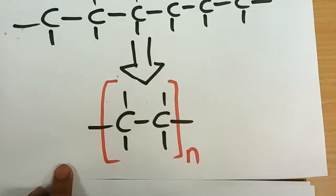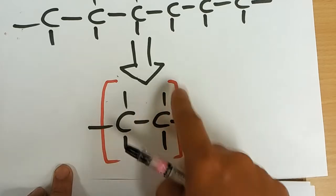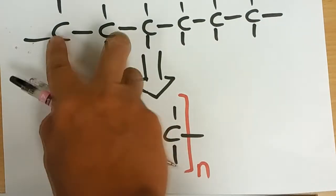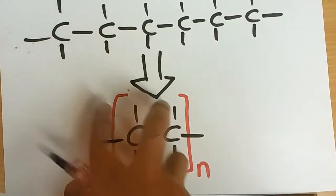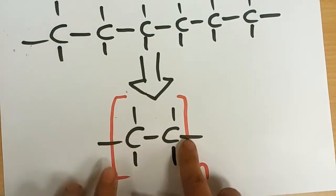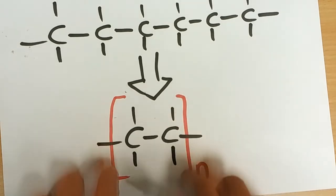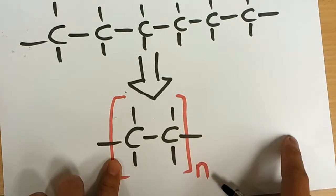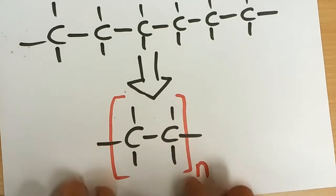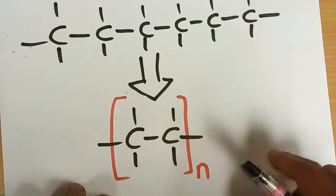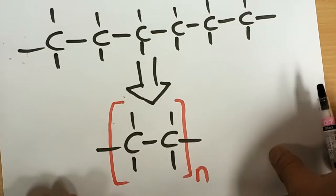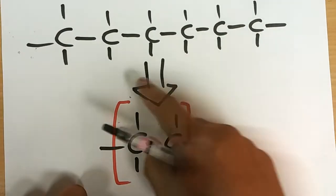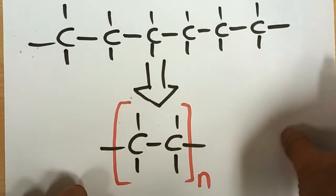How we represent it in chemistry is by taking a repeating unit — something that repeats, a pair that repeats — put it in brackets, put a line there, and put a square bracket with an N. The line tells us that the chain is continuing, and the bracket with N tells us it is based on the number of monomer units used.